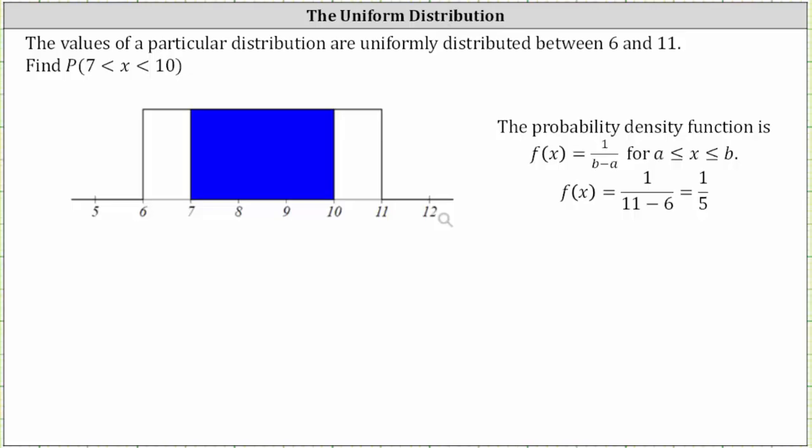The values of a particular distribution are uniformly distributed between six and 11. We're asked to use the graph below to determine the probability that x is greater than seven and less than 10.